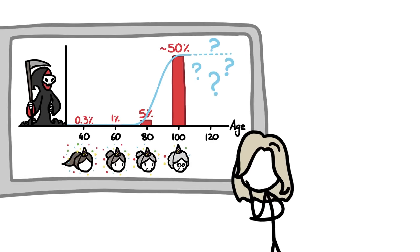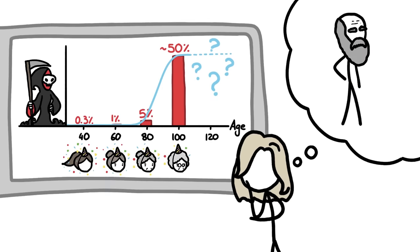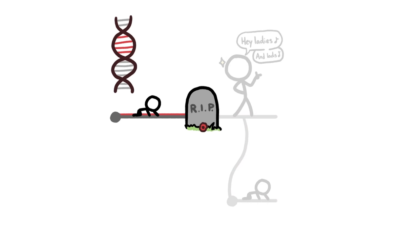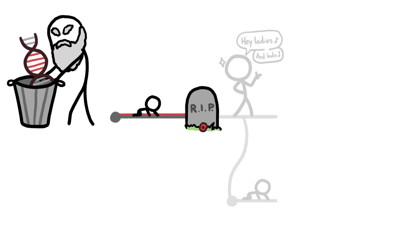So what would make the mortality curve flatten out like that? One theory is that it has to do with natural selection and bad genes. The other kind. Take a hypothetical gene mutation that proves fatal during childhood. Because it kills its host before they get old enough to reproduce, it never gets passed on. Natural selection weeds it out.